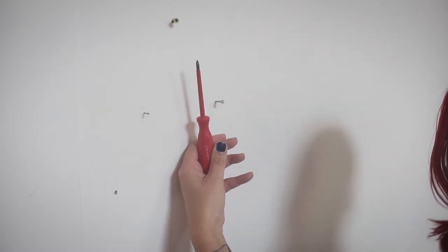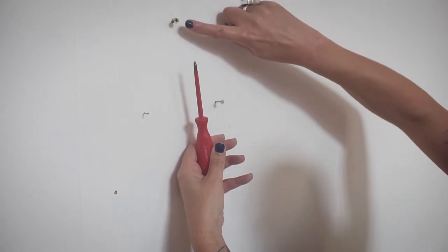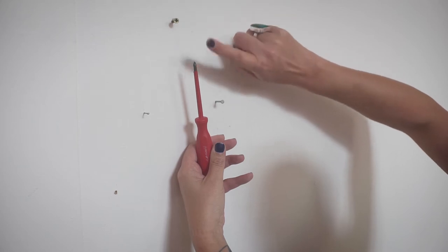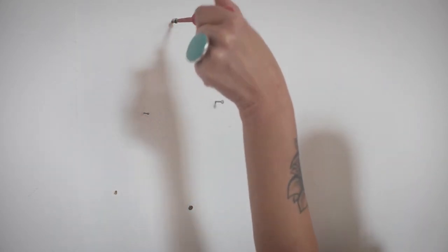The heads come in different sizes, so make sure you use the correct size. Too big and it won't fit into the screw head. Too small and it will damage the screw head and you won't be able to remove the screw.